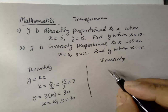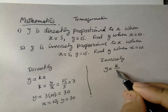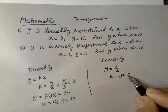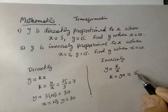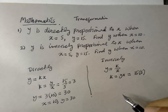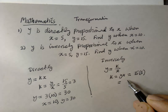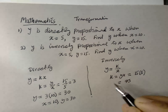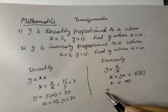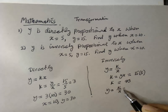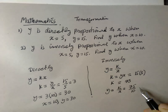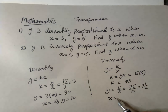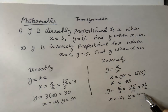So now y is inversely proportional to x, so y is equal to k over x, which means k is equal to y times x. So y is equal to 15 and x is equal to 5, so k is equal to 75. So now y is equal to k over x, so k is 75 and x is 10, giving y equal to 7.5. So when x is equal to 10, y is equal to 7.5.